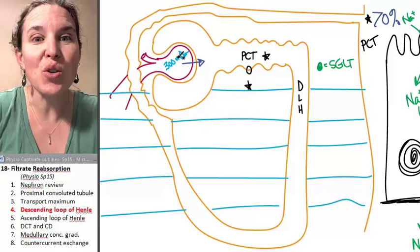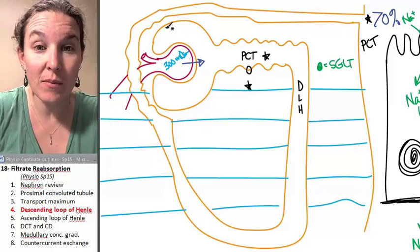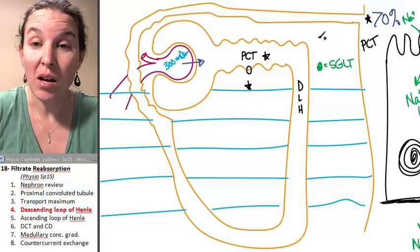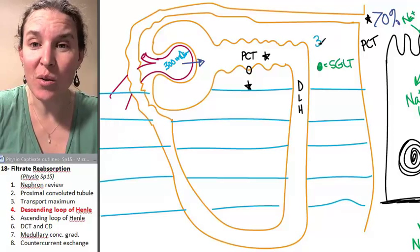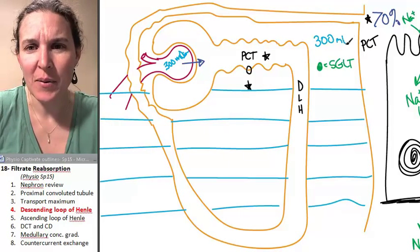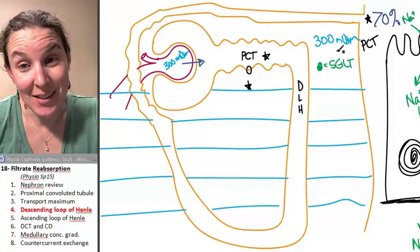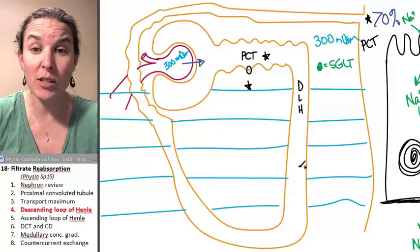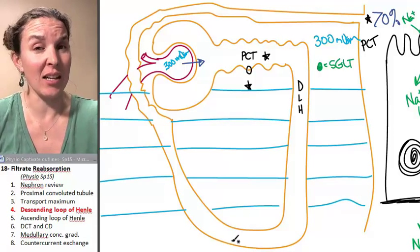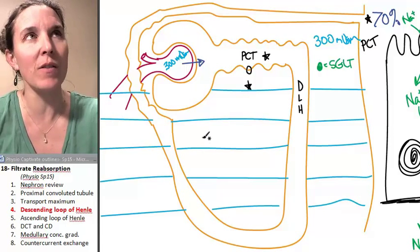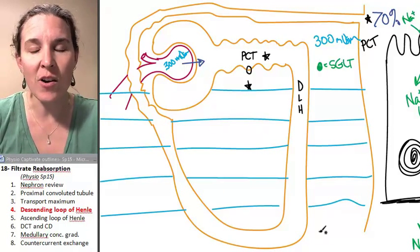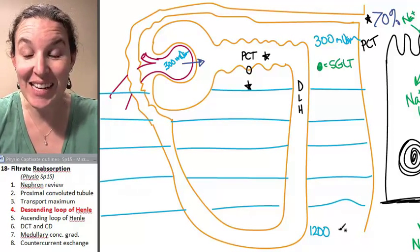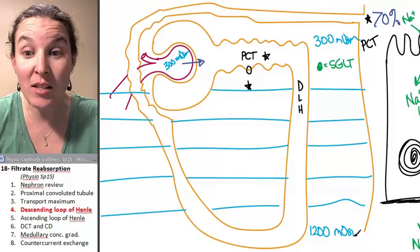The interstitial fluid surrounding the renal corpuscle is isosmotic to the blood. Of course it is. But when I say there's a concentration gradient - at the bottom of the loop of Henle, at the place where the descending loop does a hairpin turn and heads back up via the ascending loop of Henle, down at the very bottom, the interstitial osmolarity is 1,200 milliosmoles.